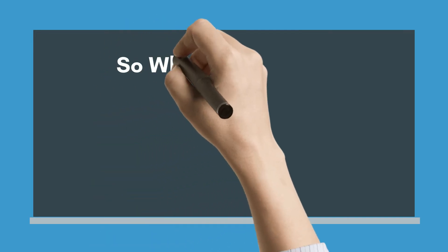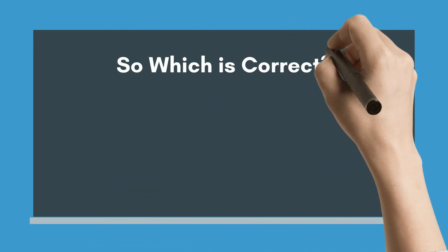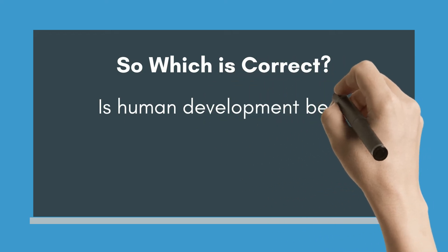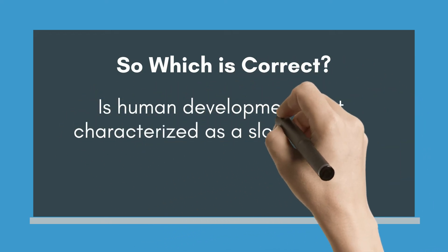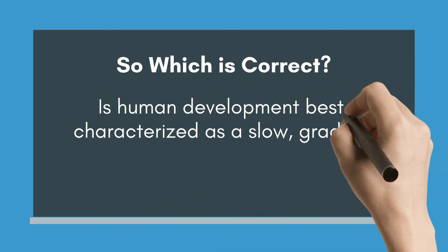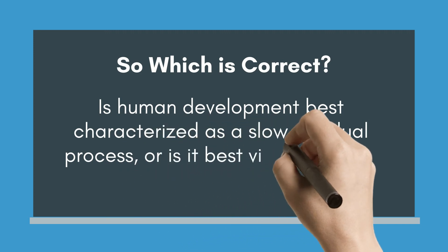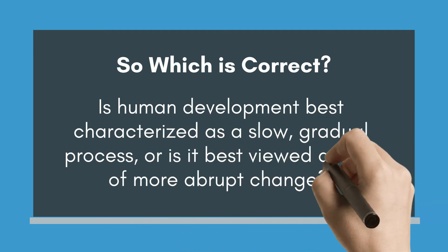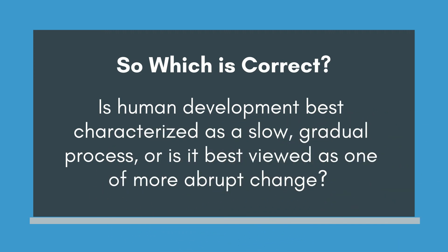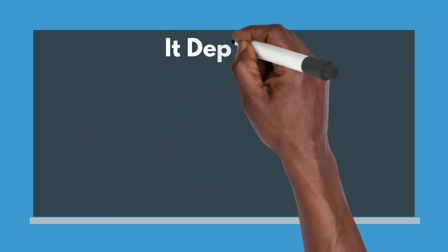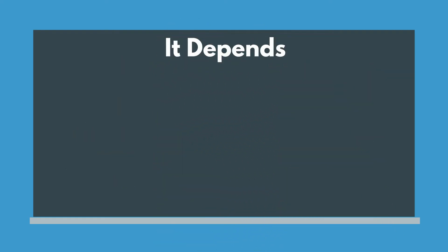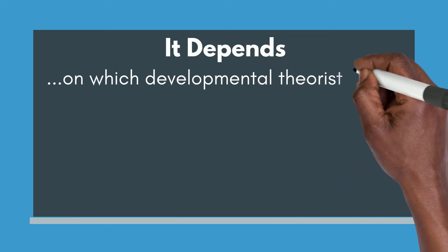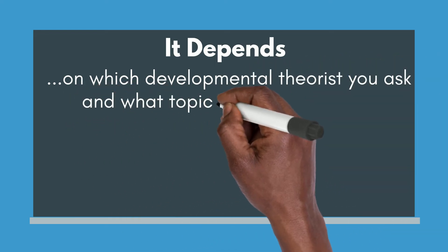So, which one is correct? Is human development best characterized as a slow, gradual process, or is it best viewed as one of more abrupt change? Well, it depends on which developmental theorist you ask, and what topic is being studied.